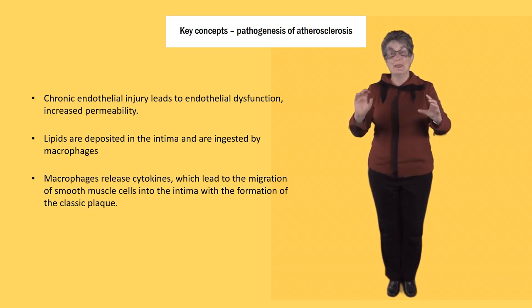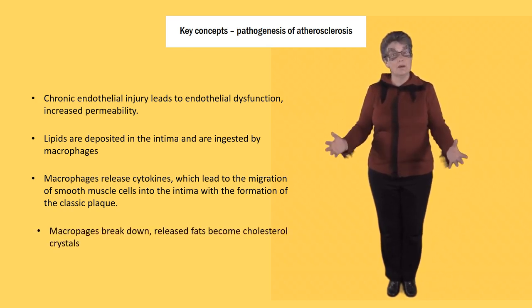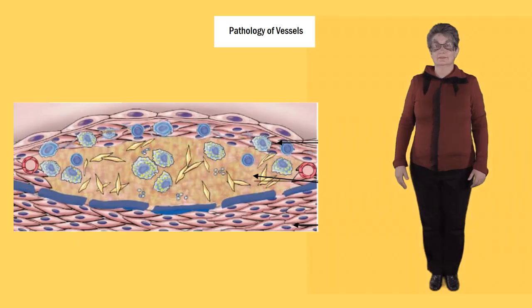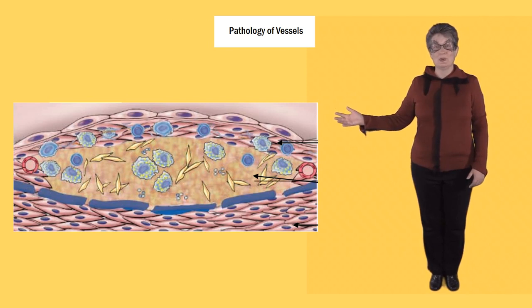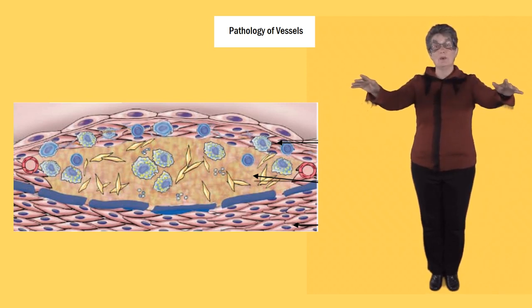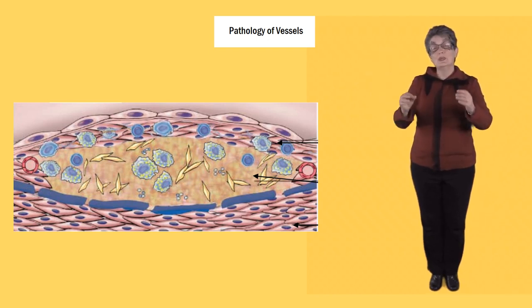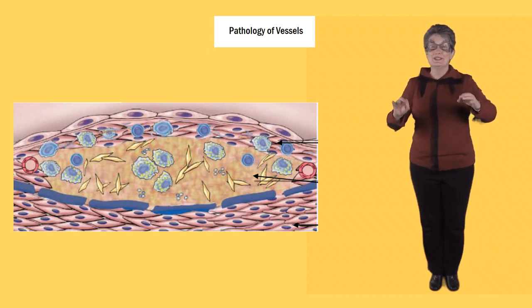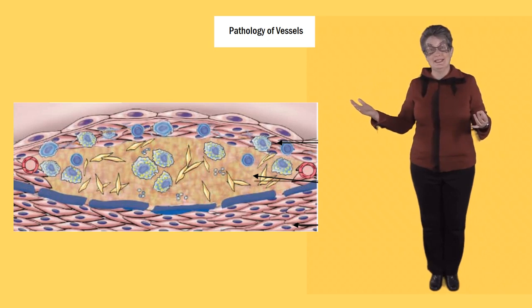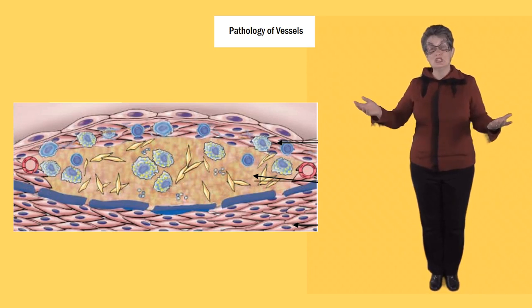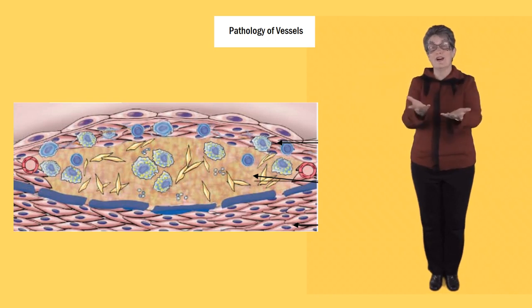The macrophages then break down and release fats which become cholesterol crystals. This picture illustrates what I've just been talking about. The endothelium is on the top — it's injured and leaky, letting fats through into the intima. You can see they've been broken down by the macrophages because they're forming cholesterol crystals. The macrophages are those blue cells. The smooth muscle that underlies the blue internal elastic lamina has migrated to over the top of the plaque, forming the fibrous cap.